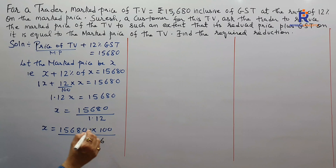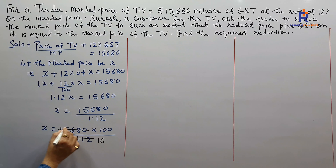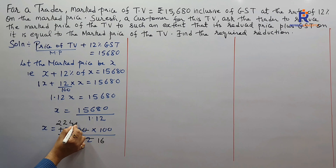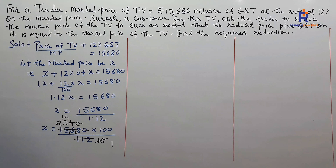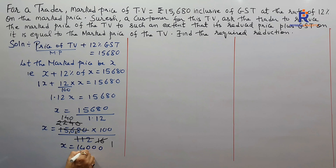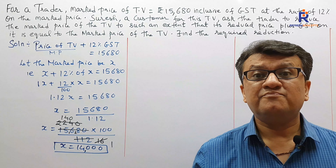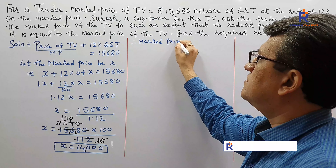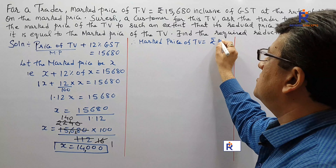Working through the cancellation: 15,680 divided by 1.12 equals 14,000. Therefore, the marked price of the television is rupees 14,000.